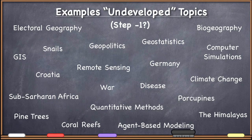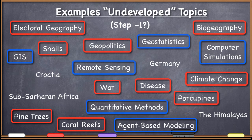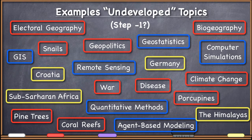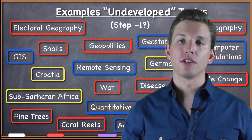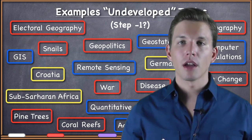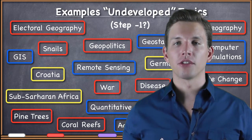If we go back and look at those undeveloped topics, you'll see they each fit into one of those three categories: methodology, location, or theme. The ones outlined in red are themes — biogeography is a big topic, porcupines is a narrower one, but they're clearly themes. The ones in blue are methods. Those that are left over should be obvious as locations. Many times when people get involved in geography and want to do a project, they choose one of those three elements of the geographic triad.